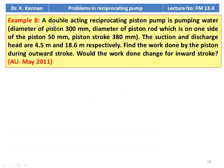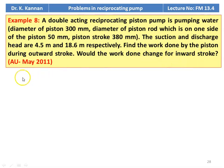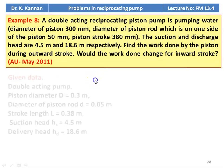Example number 8: A double acting reciprocating piston pump is pumping water. Diameter of the piston is 300 millimeter, diameter of the piston rod (on one side of the piston) is 50 millimeter. The piston stroke is 380 millimeter. The suction and discharge heads are 4.5 meter and 18.6 meter respectively. Find the work done by the piston during the outward stroke and the change in work done for the inward stroke. This is from May 2011 question paper.